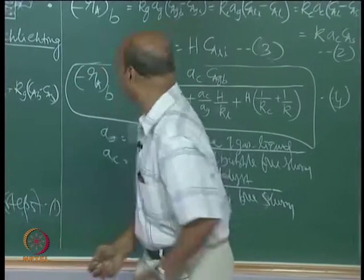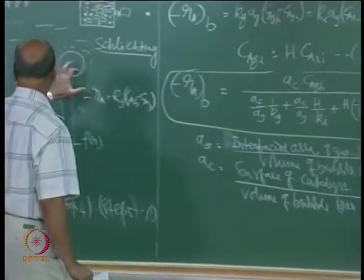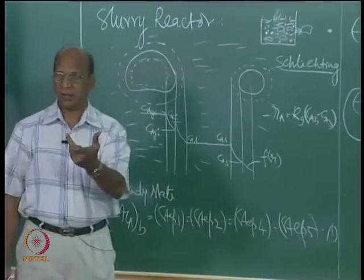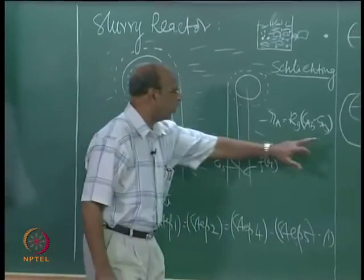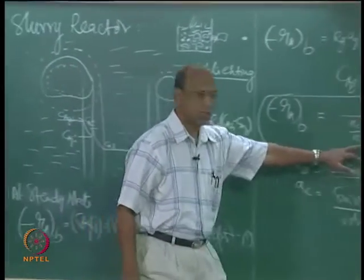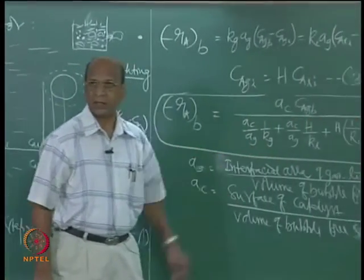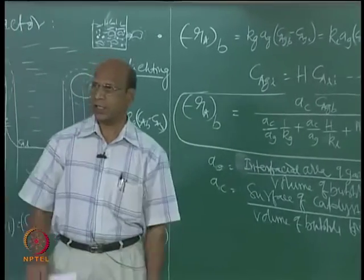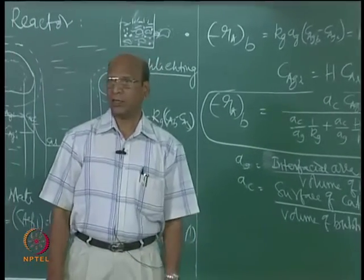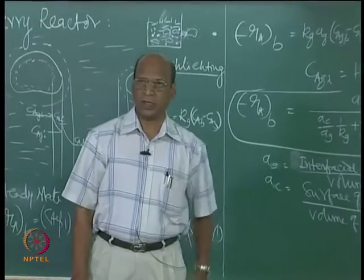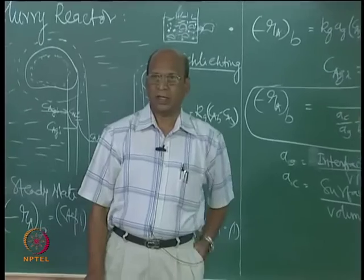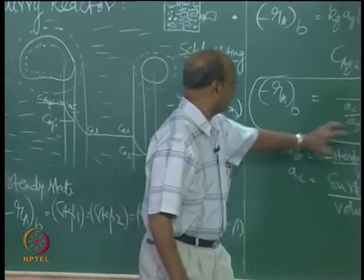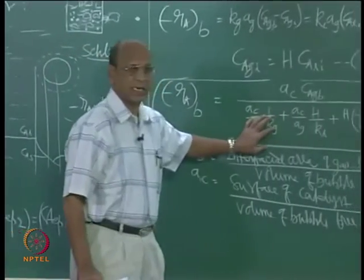Gas-gas diffusion is easy, so most of the time K_g values will be large. When diffusion is easy, K_g is large, so 1/K_g can be neglected. Then you will have only these two remaining terms.